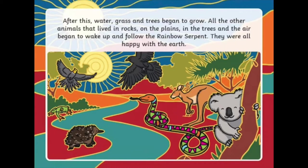After this, water, grass, and trees began to grow. All the other animals that lived in the rocks, on the plains, in the trees, and in the air began to wake up and follow the rainbow serpent. They all were happy with the earth.